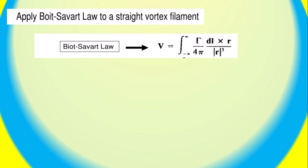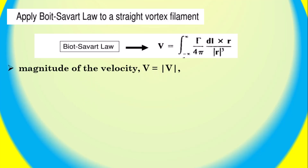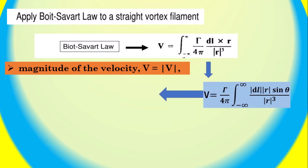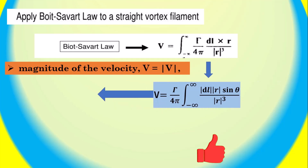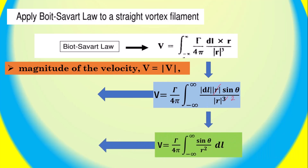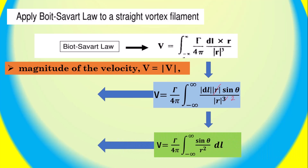The velocity induced at point P by the directed segment of the vortex filament dL is given by: V equals the integral from negative infinity to infinity of gamma divided by 4π times dL cross r divided by r cubed, where r is the position vector of point P relative to the filament. The magnitude of the velocity is given by V equals gamma divided by 4π times the integral from negative infinity to infinity of dL times sin(θ) divided by r squared. Rearranging, the equation becomes V equals gamma divided by 4π times the integral from negative infinity to infinity of sin(θ) divided by r squared times dL.